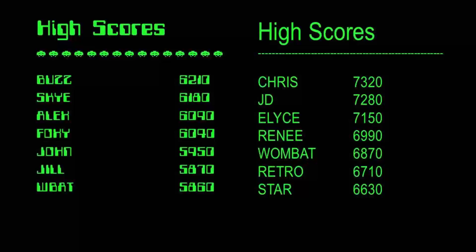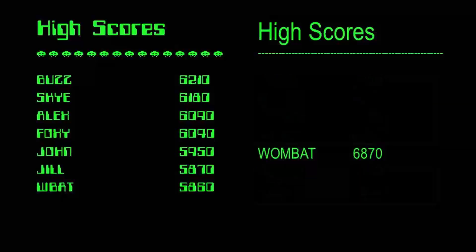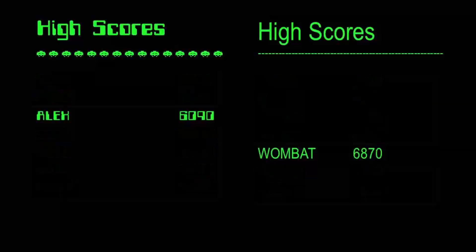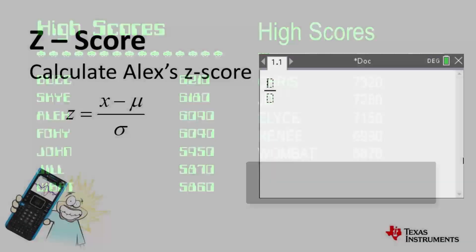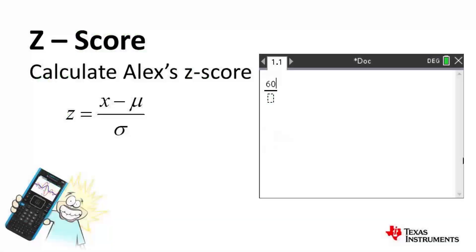Suppose one of our current day gamers, Wombat, would like to beat one of the original gamers, Alex. We know that Alex was above average, and Wombat is currently slightly below. So what score does Wombat need to get in order to beat Alex? First we work out Alex's standardized score.